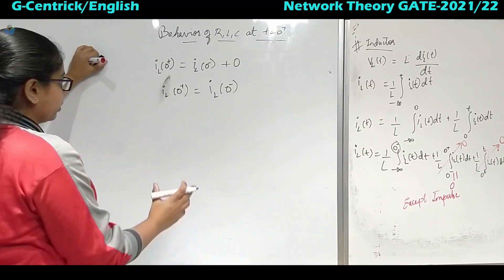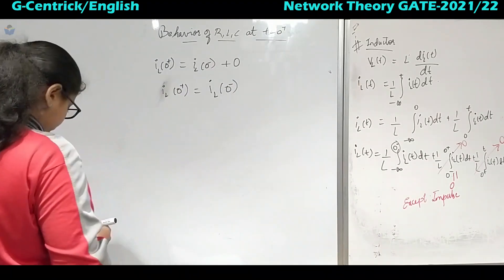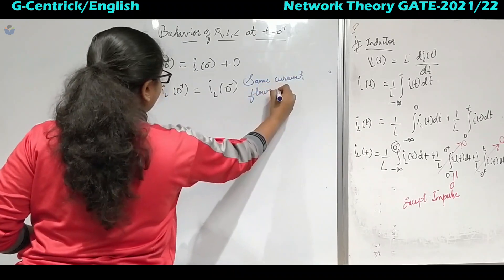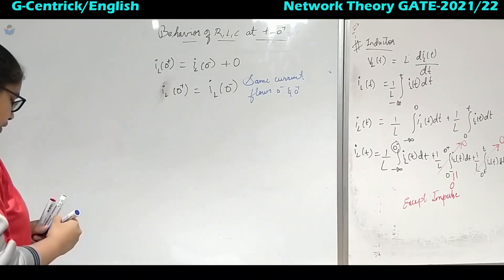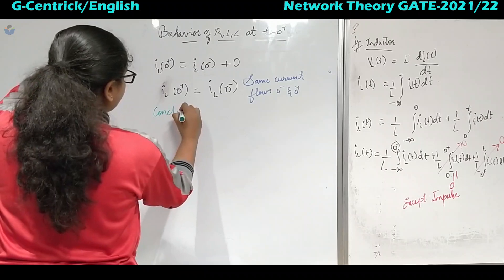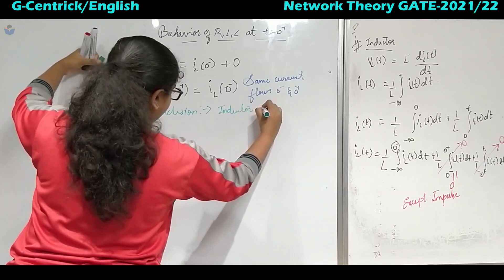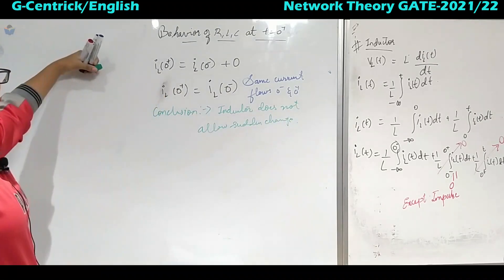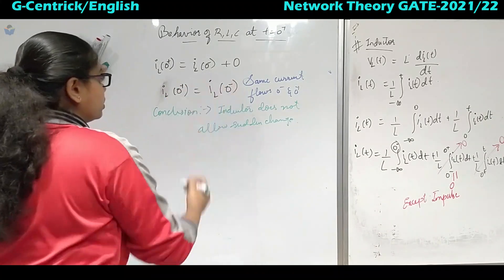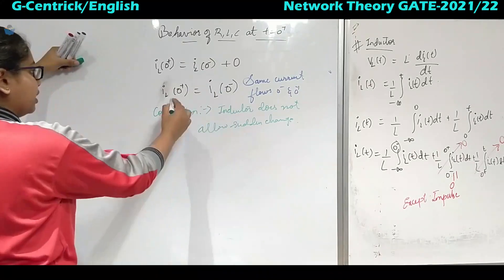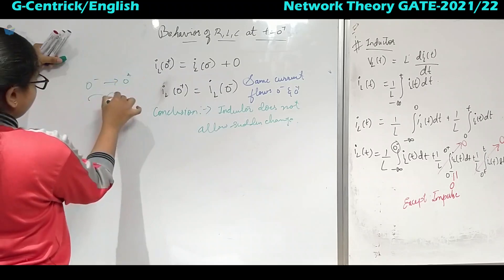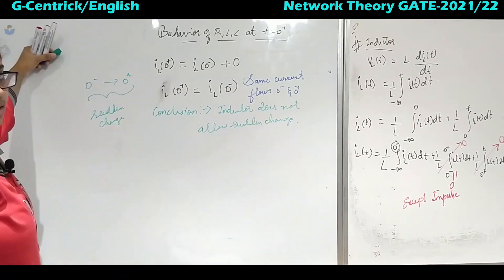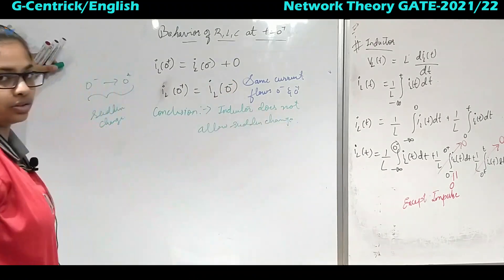The conclusion is that the same current flows at 0 minus and 0 plus — that is why they are equal. Inductor does not allow sudden change. From the 0 minus to 0 plus transition, we get the same value. This transition from 0 minus to 0 plus is defined as a sudden change — for a very short time period it is called sudden change. The inductor will not allow this sudden change.